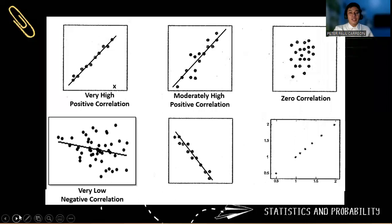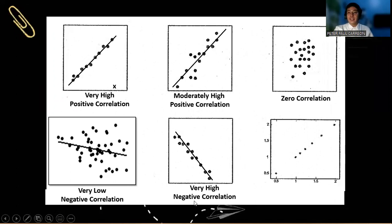Next is a very high negative correlation. So the direction is negative and the strength is very high.